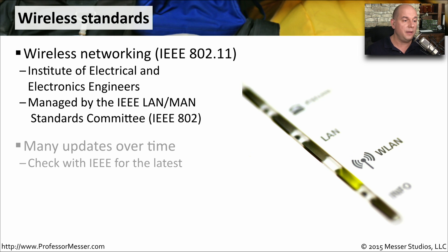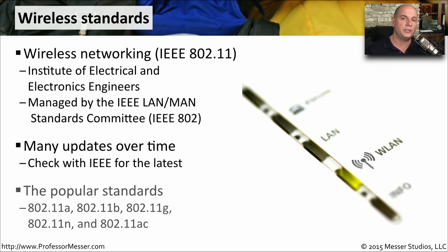There have been many updates to wireless networks over time. In this video, we're going to focus on the major releases of 802.11 networks, which are 802.11a, b, g, n, and ac.